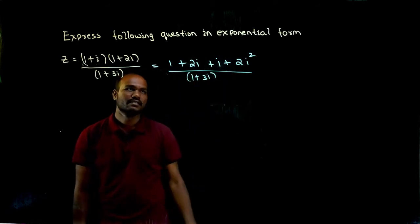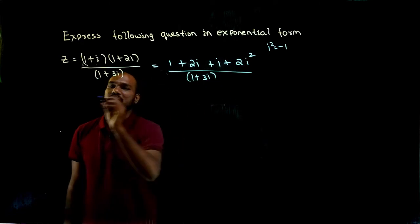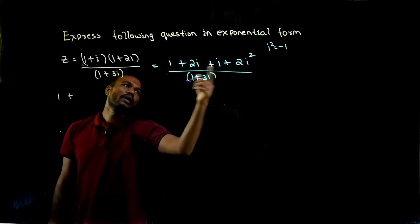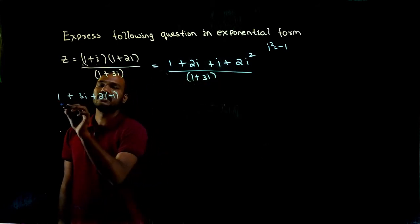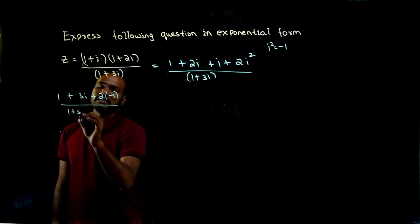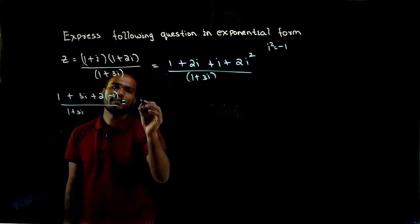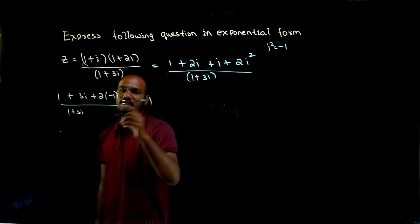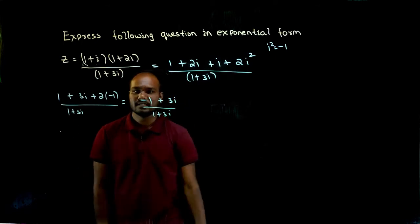i square value is what? Minus 1. So if I substitute this: 1 plus 2i plus i is 3i, plus 2 times i square value is minus 1, divided by 1 plus 3i. So 2 minus 1 is minus 2—minus 2 plus 1 is minus 1. So minus 1 plus 3i divided by 1 plus 3i.